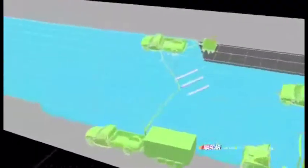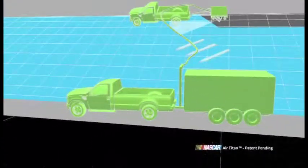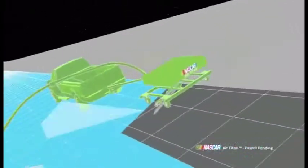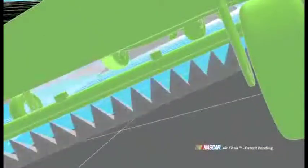Compressors feed air at a high rate of speed through a hose to the Air Titan modules. The Air Titan then blows air in narrow, highly pressurized sheets over the track surface, pushing water from the asphalt.